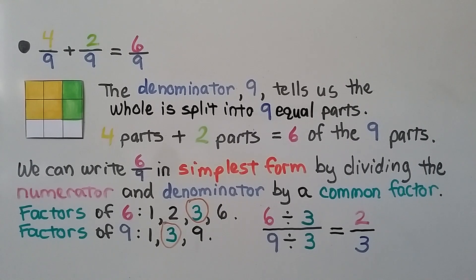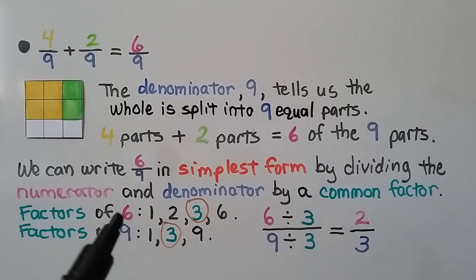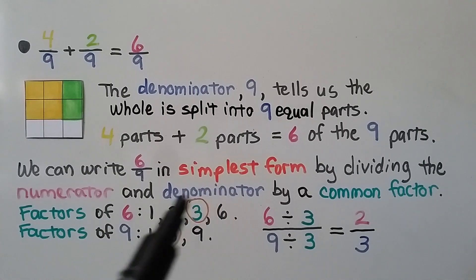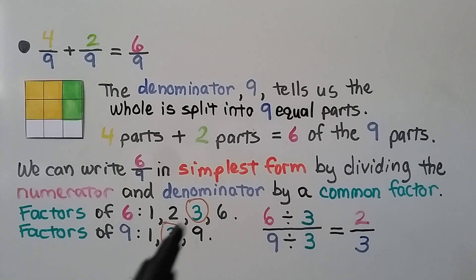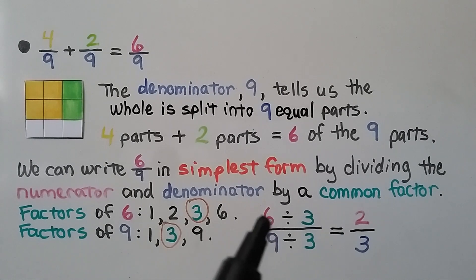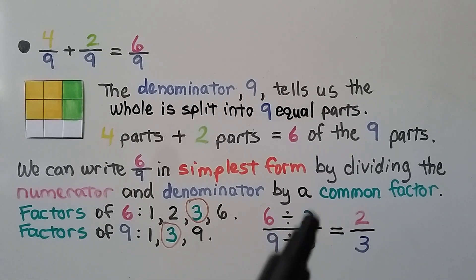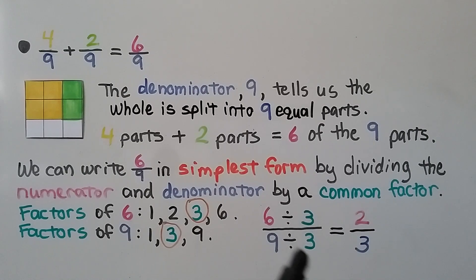Since the denominators are the same, we just added the numerators to get six-ninths. To write six-ninths in simplest form, we divide the numerator and denominator by a common factor. The factors of six are one, two, three, and six; the factors of nine are one, three, and nine. The common factor is three. Six divided by three is two, and nine divided by three is three. In simplest form, six-ninths equals two-thirds.